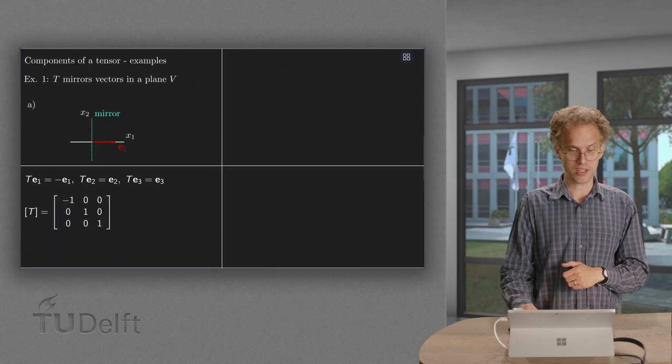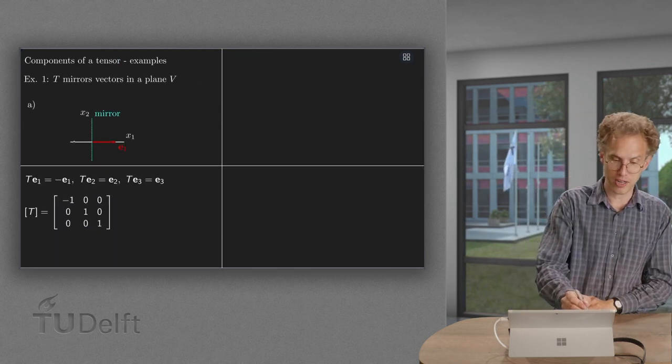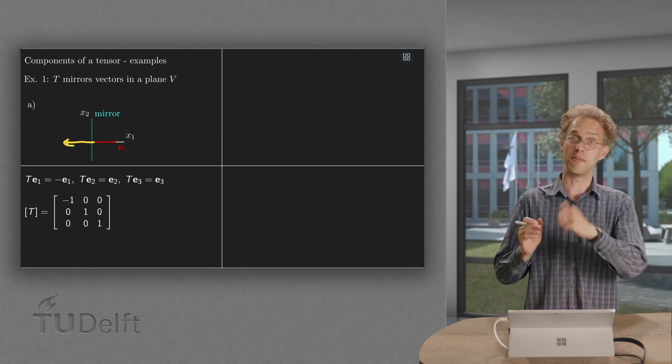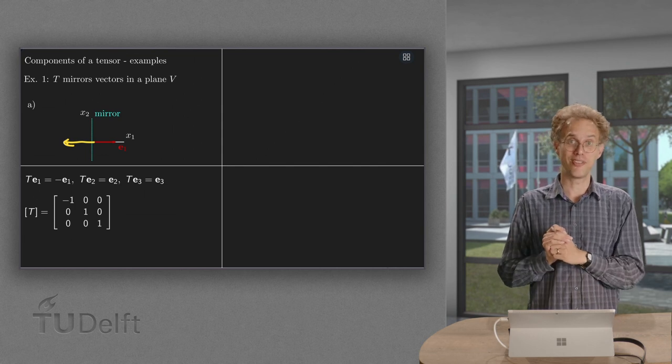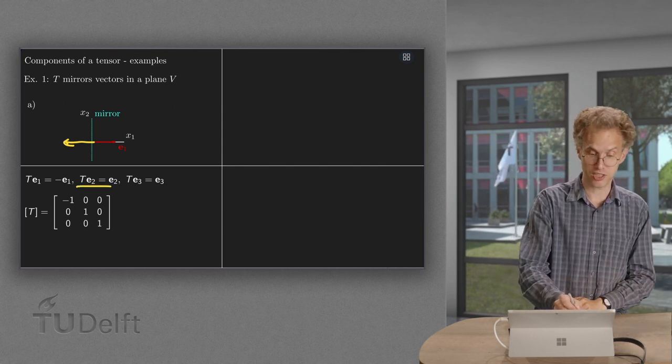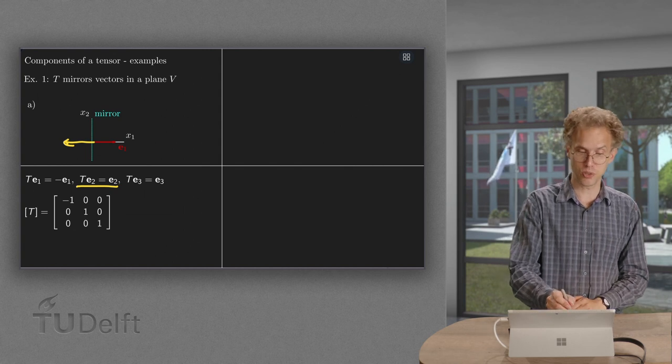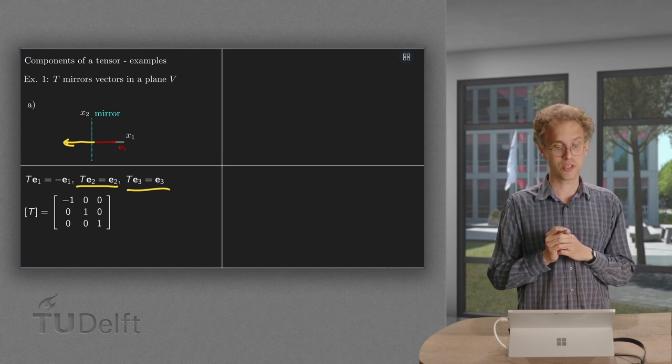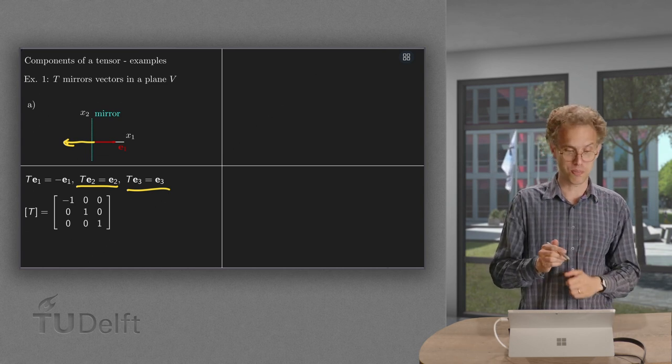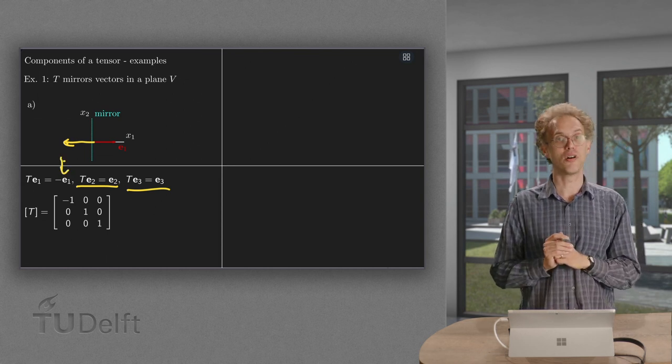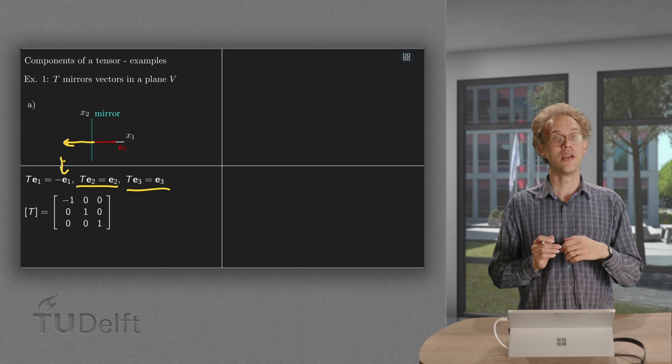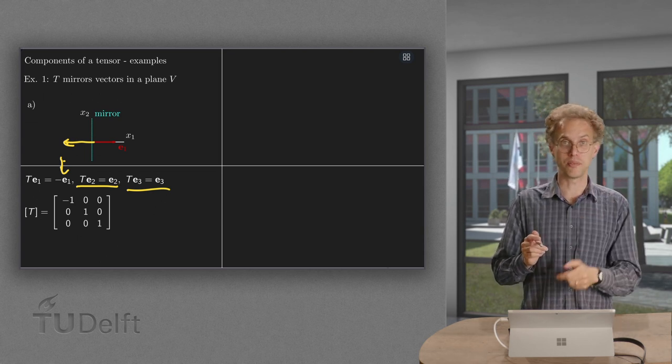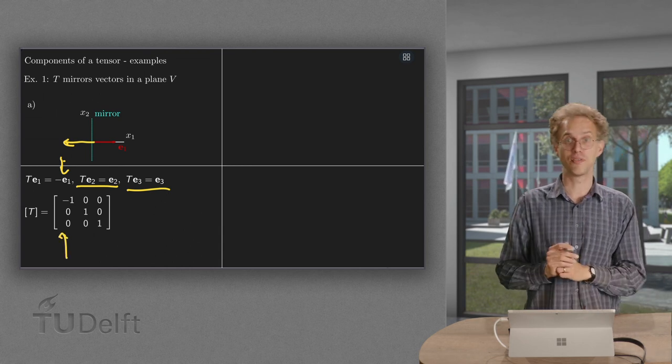Well in that case, if we mirror our e1, it is mirrored to this vector over here which is exactly minus e1. Both e2 and e3 are in the mirror so they're not changed. The image of e2 is just e2 and of e3 is just e3. So how do we find the components of our tensor? Then we have to express T(e1) in terms of the basis vectors e1, e2, and e3. Well, T(e1) equals minus 1 times e1 plus 0 times e2 plus 0 times e3, so our first column becomes minus 1, 0, 0.